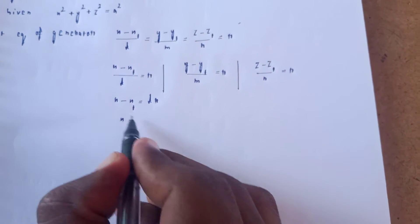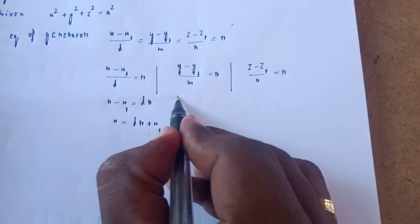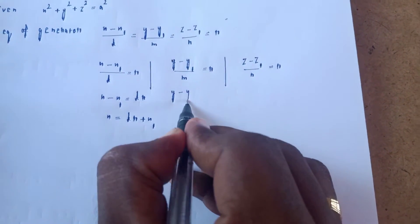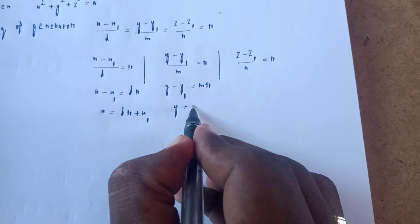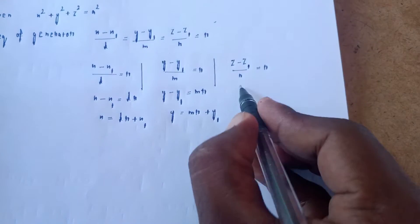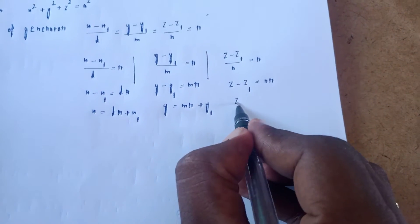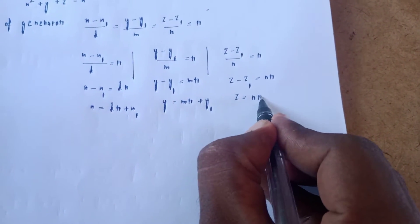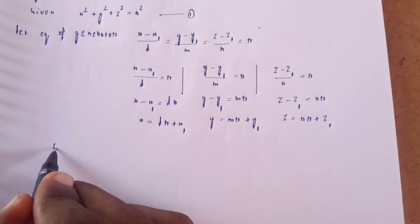Therefore x = LR + x1. Similarly y = MR + y1. And z = NR + z1. Substituting these x, y, z values into equation number 1 (the sphere equation).